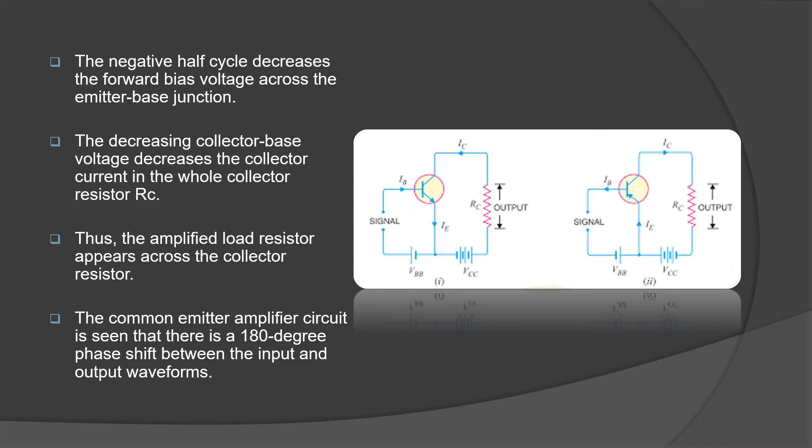The important thing to note is, the common emitter amplifier circuit has 180 degree phase shift between the input and the output waveforms.